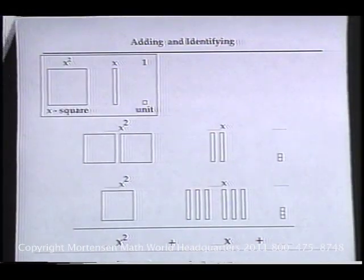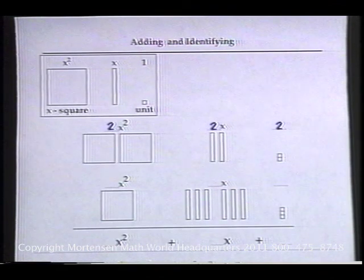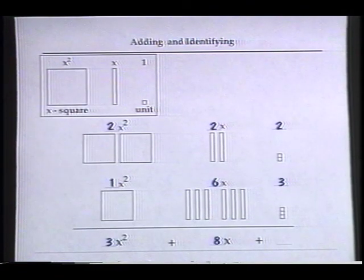Now on to page 20. Let's tell how many of each kind, then count them, then write the answer. The top row is two X-squares, two X's, and two units. The bottom row is one X-square, six X's, and three units. Counting the same kinds added together, there are three X-squares, plus eight X's, plus five units.